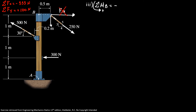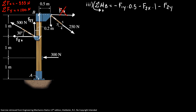So here it's minus F1y times 0.5, because I'm going clockwise. Then I have F2x and F2y — both generate moments. So minus F2x times 1, because that's the distance from point B, and then minus F2y times 0.2, which is the distance from point B. And here, minus F3 times 2, which is the distance from my point B.